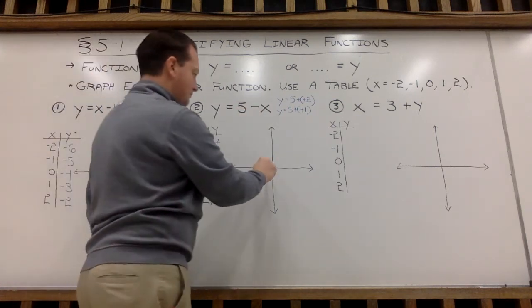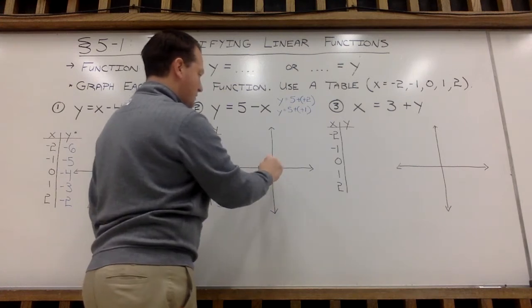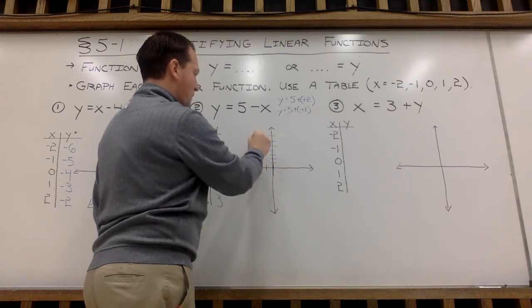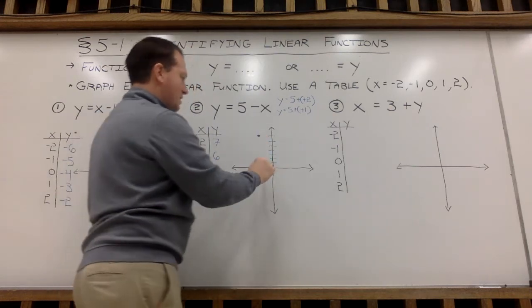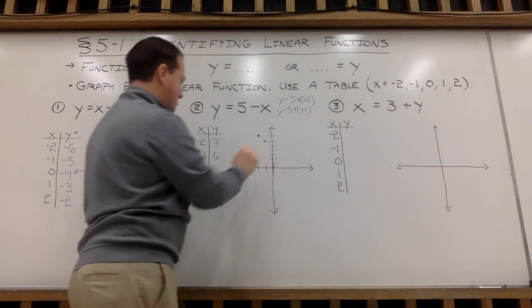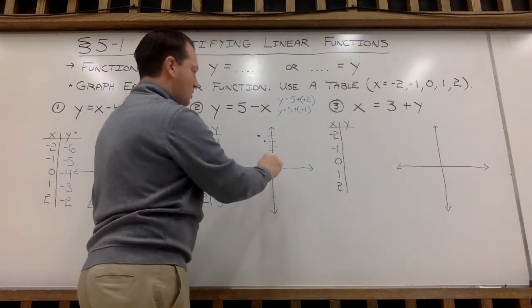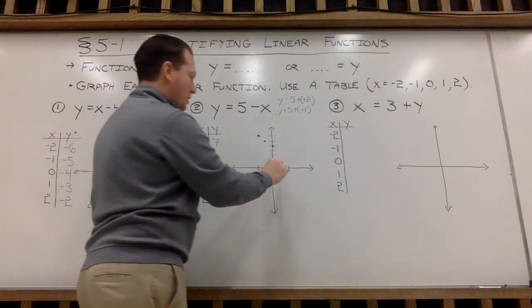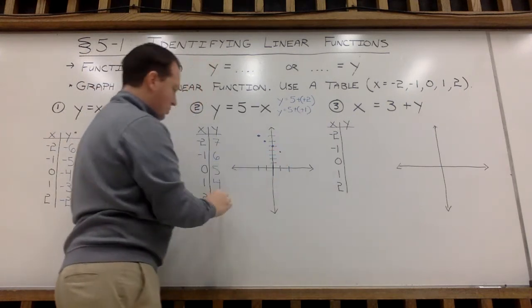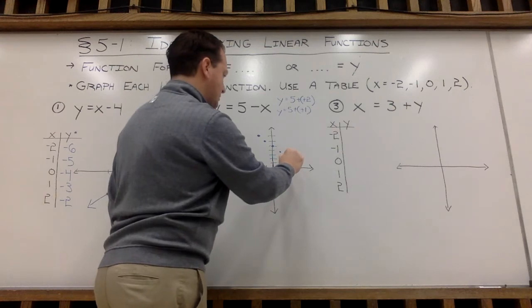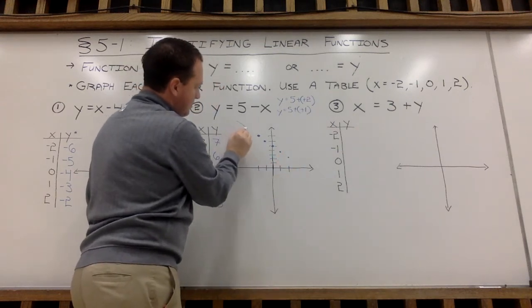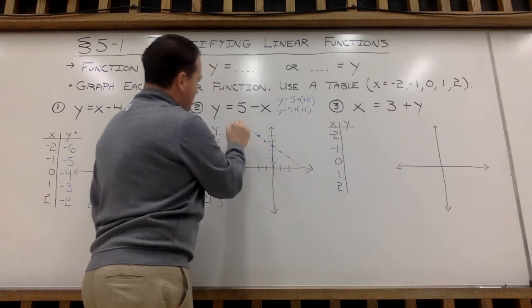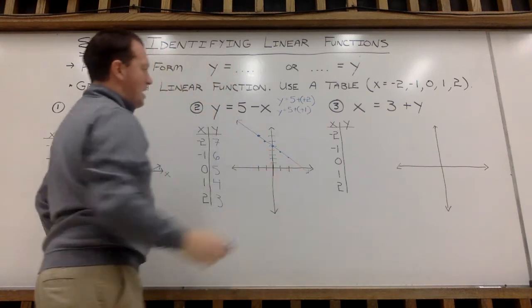So negative 2, 7 is 2 to the left, up 1, 2, 3, 4, 5, 6, 7. Negative 1, 6, 1 to the left, up 6. 0, 5. Nowhere left to right, up 5. 1 to the right, up 4. And then 2 to the right, up 3. And I have my line here connecting my dots and extending. There is the graph of my function.